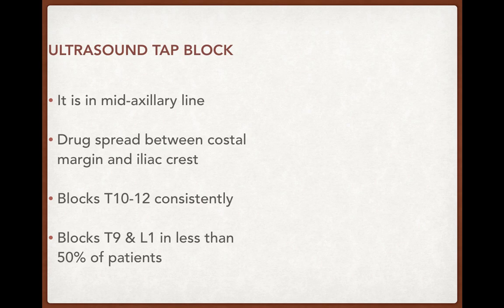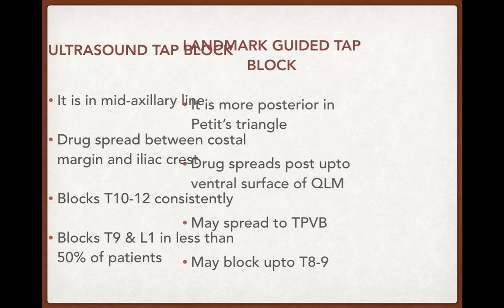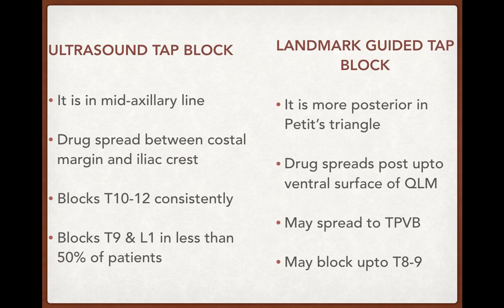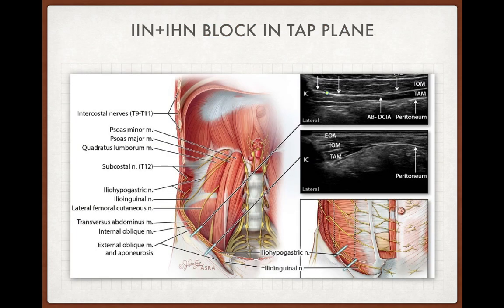Comparing ultrasound-guided versus landmark-guided TAP block: the ultrasound-guided block in the mid-axillary line has drug spread between costal margin and iliac crest, consistently blocking T10 to T12, and sometimes T9 and L1 in about 50% of patients. The landmark-guided TAP block in the Petit triangle is more posterior; drug spreads to the ventral surface of the quadratus lumborum muscle and may spread to the thoracic paravertebral space, potentially blocking T8 and T9, providing more analgesia compared to the ultrasound-guided TAP block.